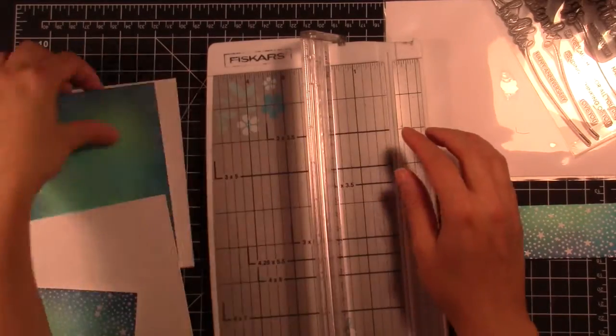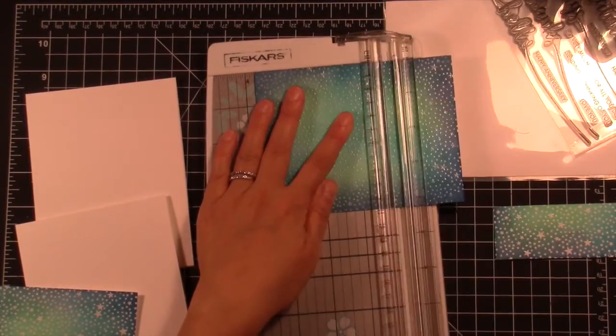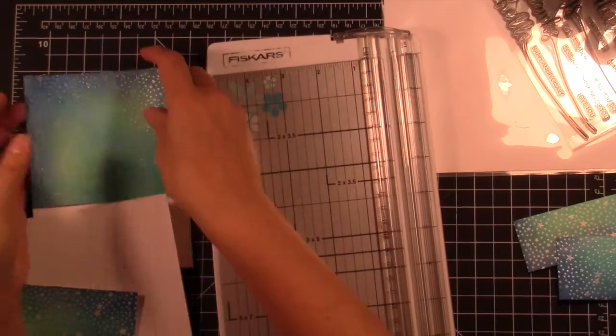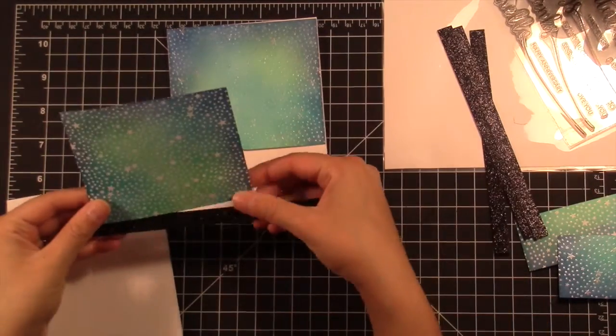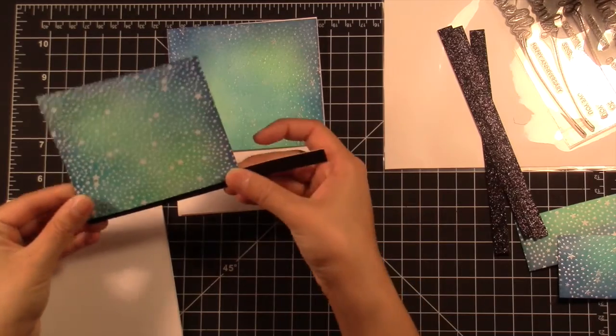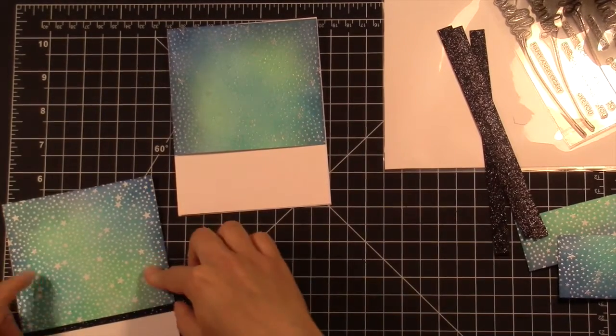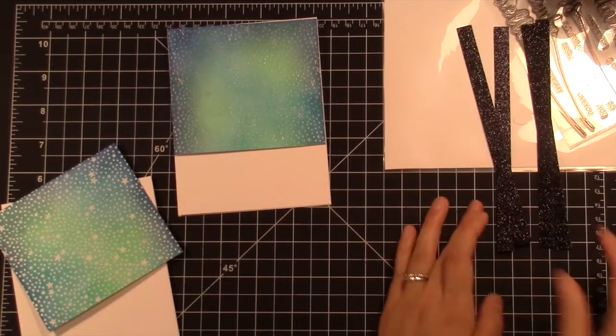So I went ahead and cut that for both, and actually after I did this, I realized that I needed to create more to have on hand just in case. I cut them both at three and three quarters. And I felt like they were getting lost in that white background, especially this one with the white embossed stars.